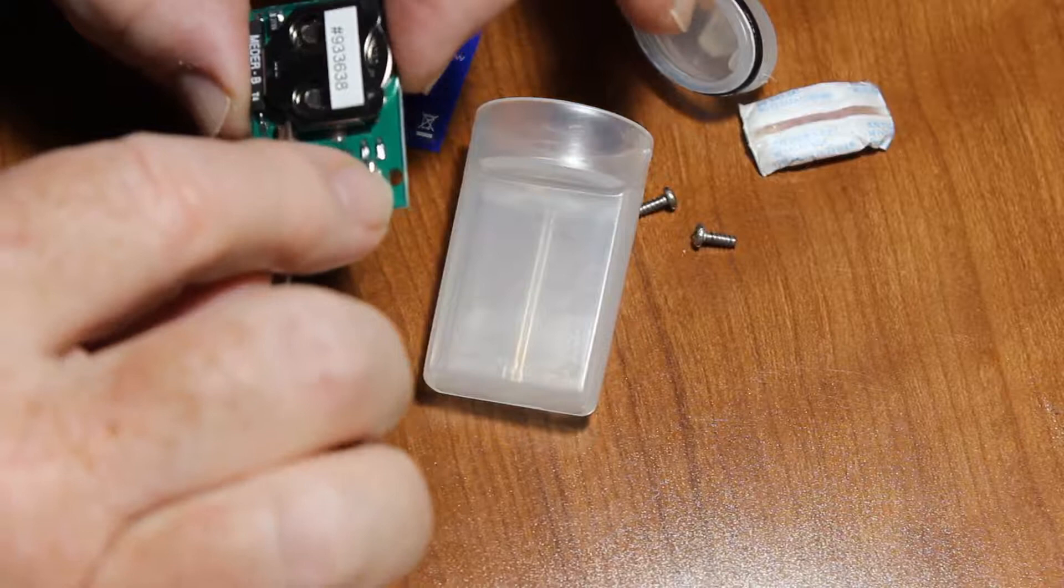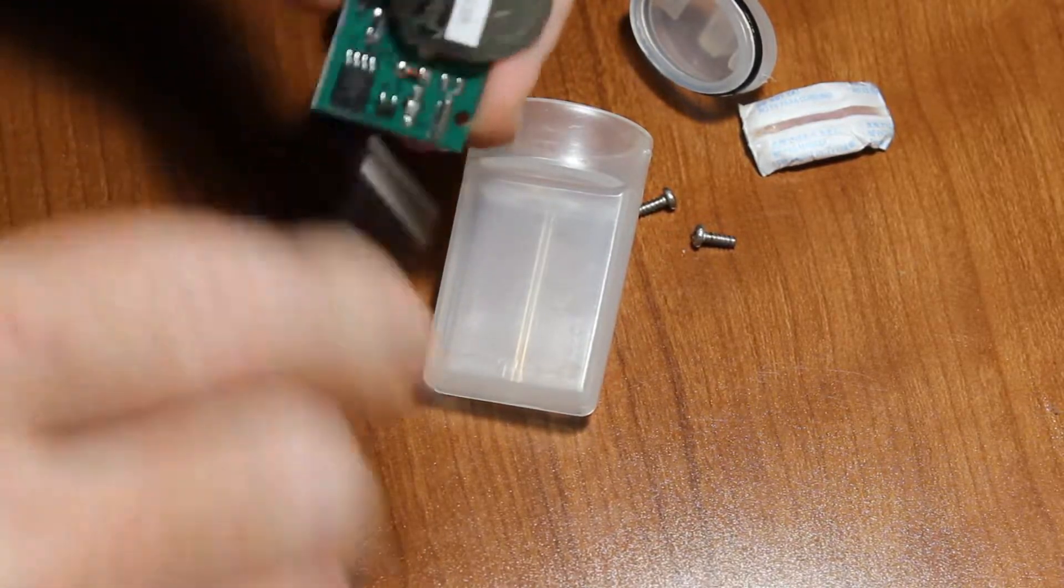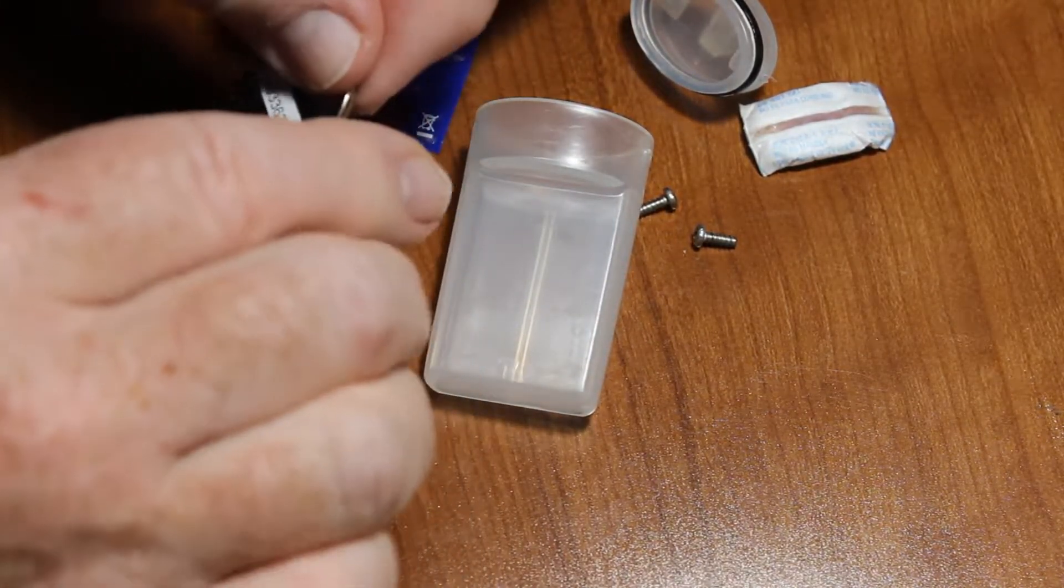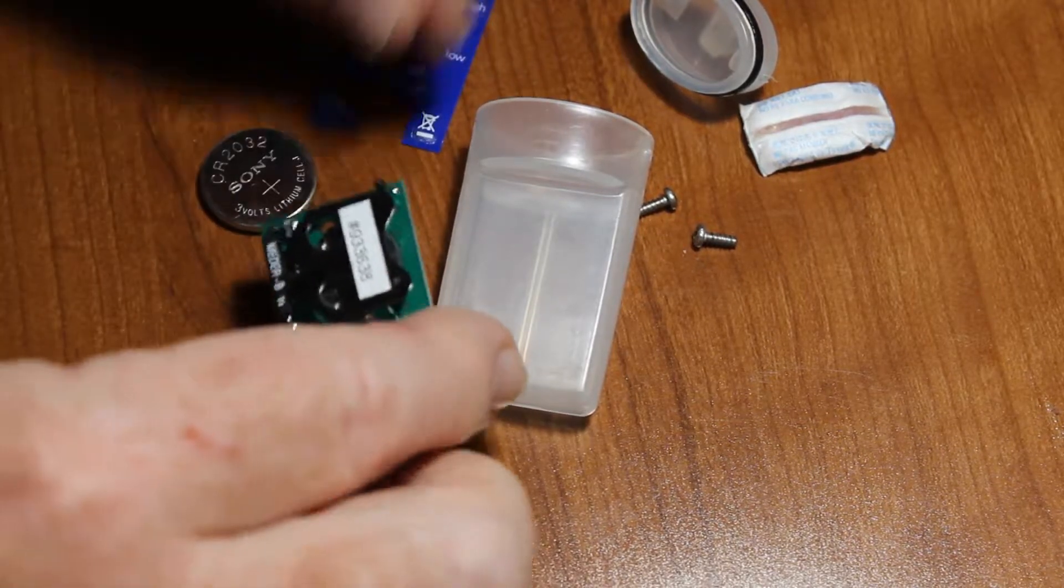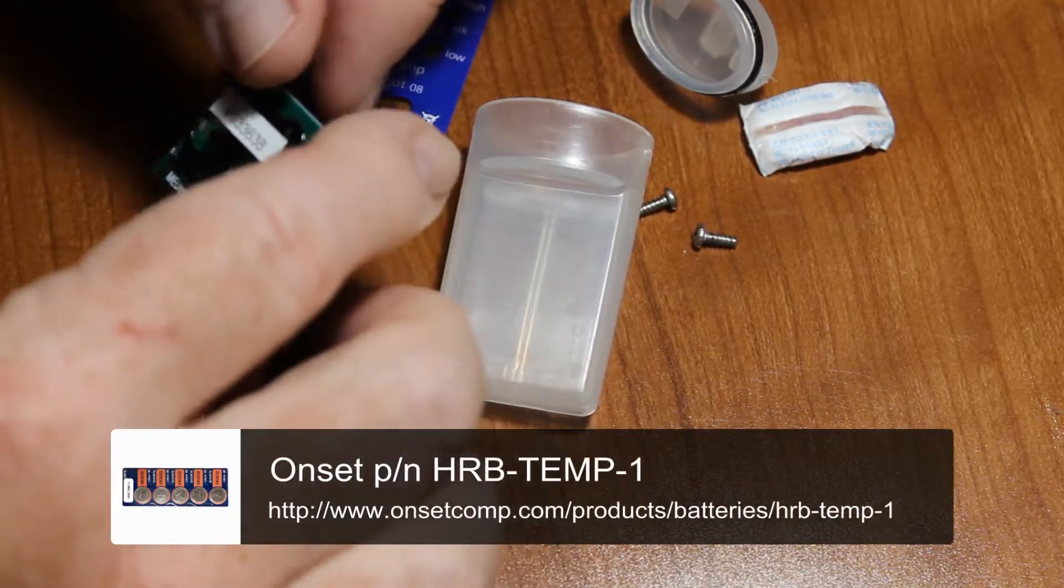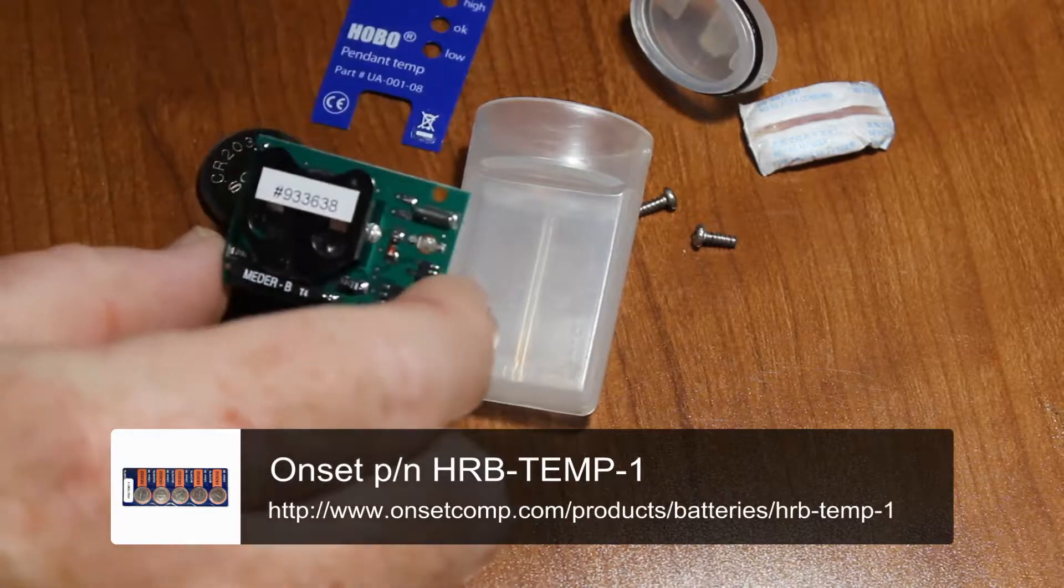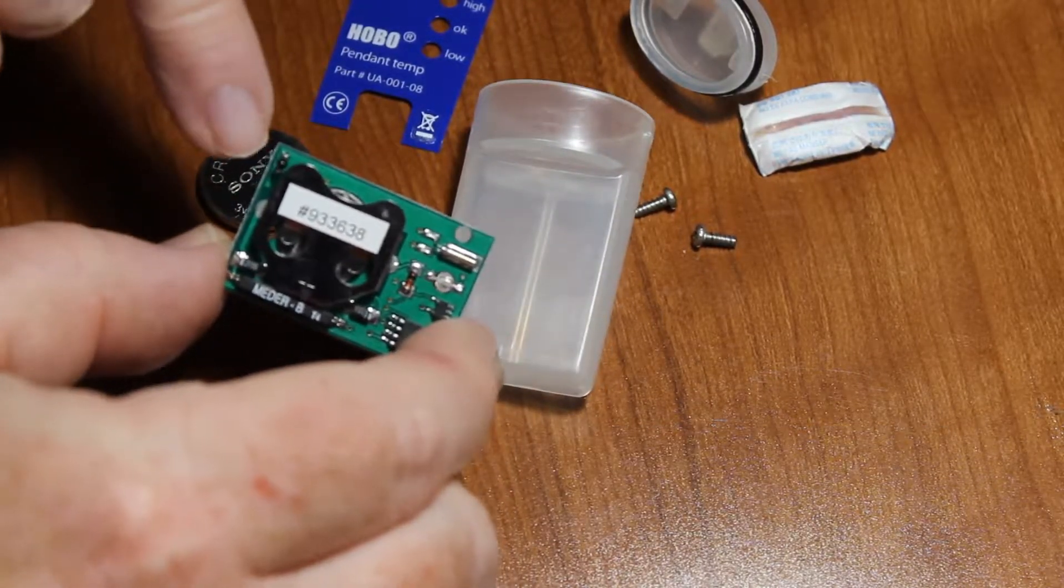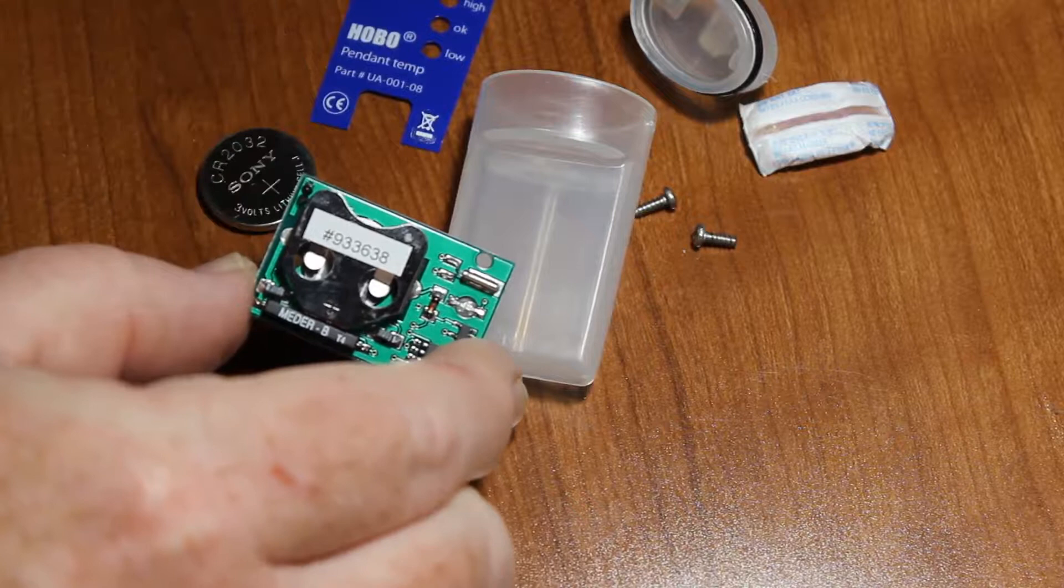Then we want to just push this battery out of here. It's a CR2032 battery, coin cell battery. For those of you interested, this is the thermistor right here where the temperature measurements are made.